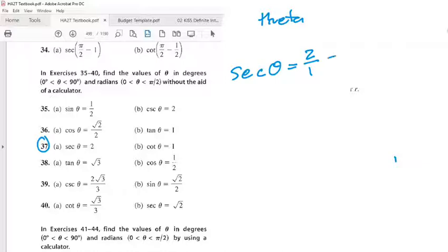Do you guys know what secant is? It's the hypotenuse over adjacent. Hypotenuse over adjacent, that's right. So this is adjacent, we're gonna ignore the opposite for now. We have to find the degrees.